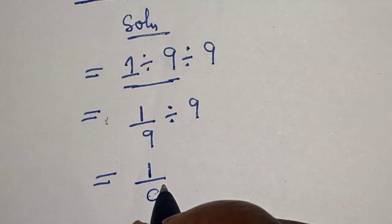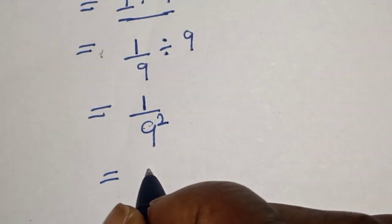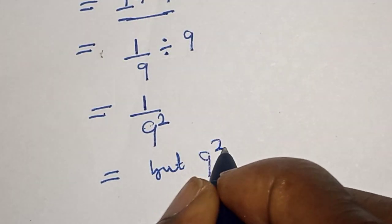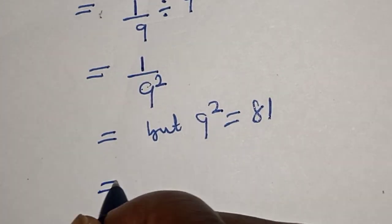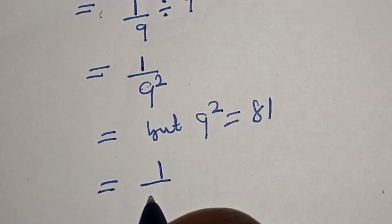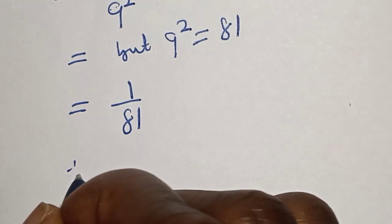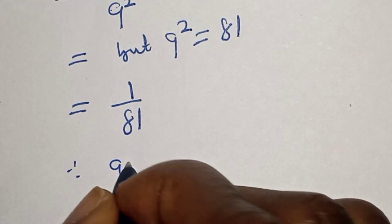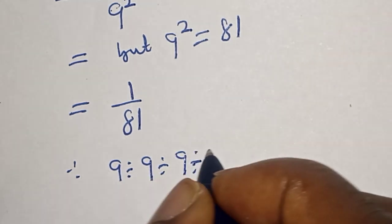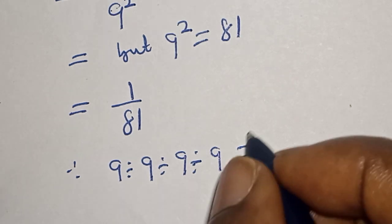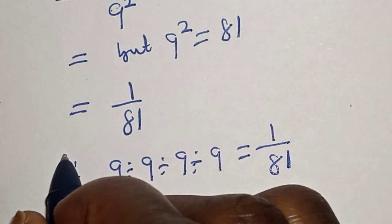Over 9 squared. But we know that 9 squared is 81. 9 squared is equal to 81. Let's substitute — this is equal to 1 over 81. Therefore, 9 divided by 9 divided by 9 divided by 9 is equal to 1 over 81.